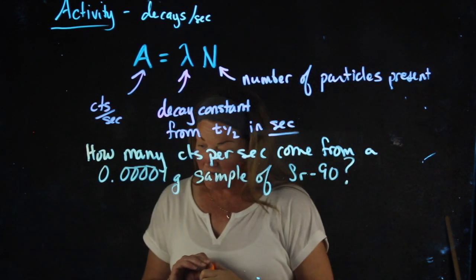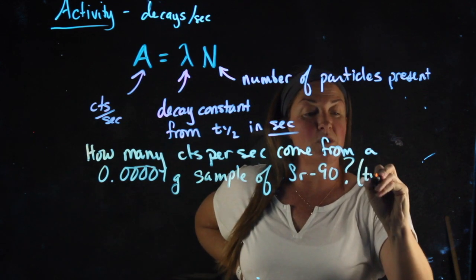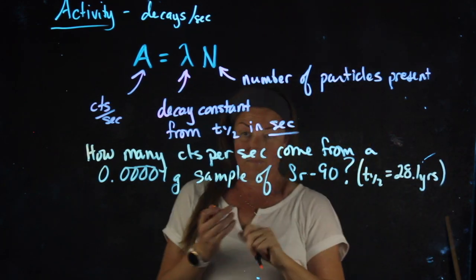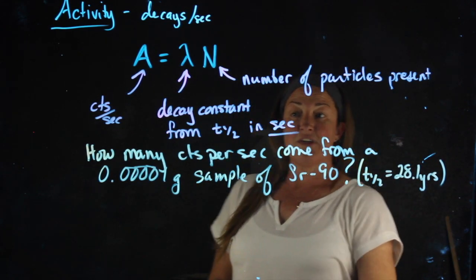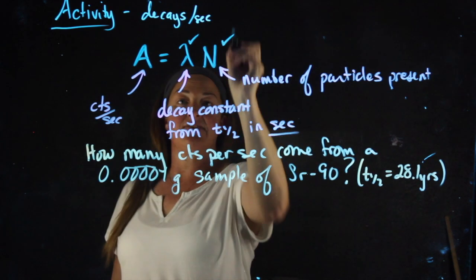Once again, I want you to remember that the half-life of Strontium-90, which we looked at in a sample problem, is 28.1 years. So two things I need to get before I can solve this. I need to get the number of atoms, and I need to get the decay constant.